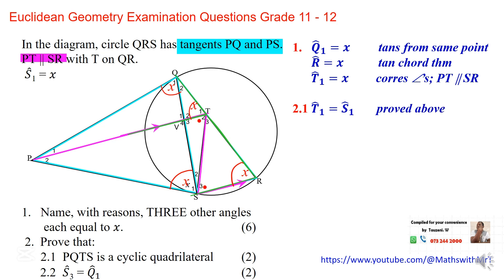For the second question, we need to prove that PQTS is a cyclic quadrilateral. There are three ways to show this: first, if opposite angles add up to 180°, it is a cyclic quadrilateral. Second, if the exterior angle equals the opposite interior angle, it is a cyclic quadrilateral. Third, if angles in the same segment are equal, that also shows the figure is a cyclic quadrilateral.